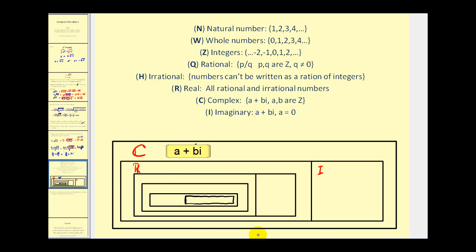The remaining sets are ones we've already worked with throughout algebra. Starting with the innermost rectangle: the natural numbers are 1, 2, 3 — the counting numbers — and they form the innermost set. The only difference between whole numbers and natural numbers is that whole numbers include 0, so that's the next set. Then come the integers, which consist of positive and negative natural numbers and 0. Finally, natural numbers, whole numbers, and integers are all rational, so they fall within the rational numbers set, which leaves the remaining set to be the irrational numbers. It's important to know how the sets of numbers relate to one another, so consider sketching this diagram in your notes.